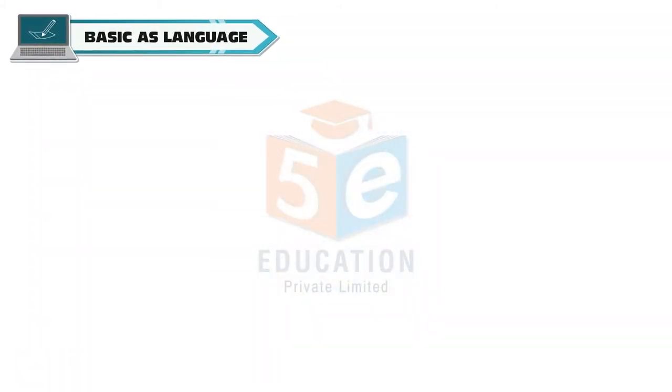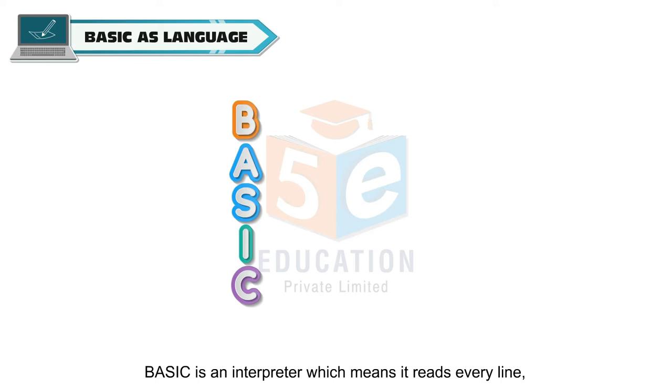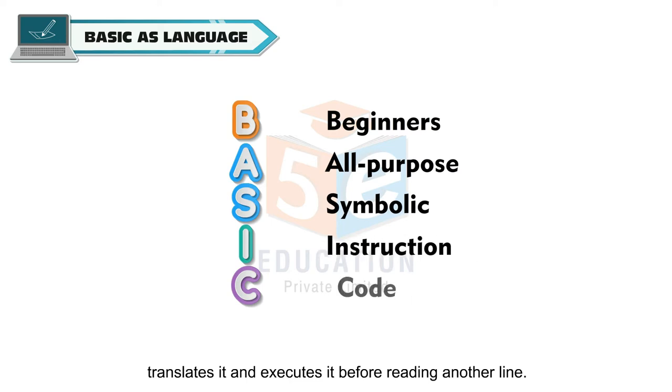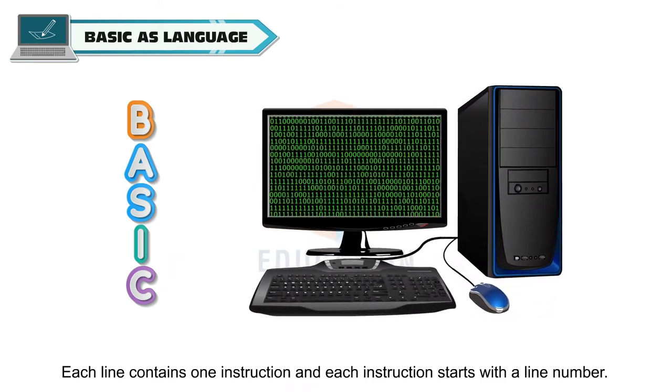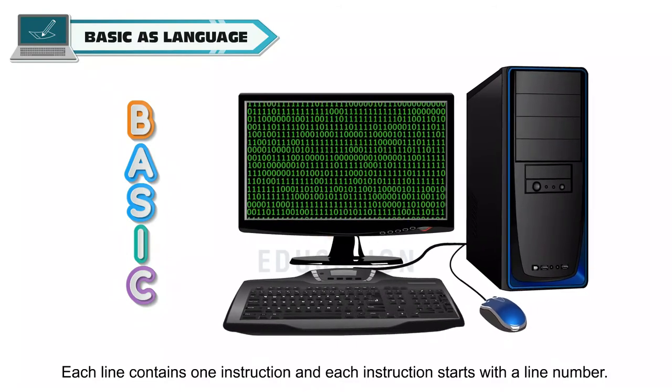Algorithm and flowchart are the first steps towards writing a program. Let us learn about how to write BASIC program. BASIC is an interpreter which means it reads every line, translates it and executes it before reading another line.